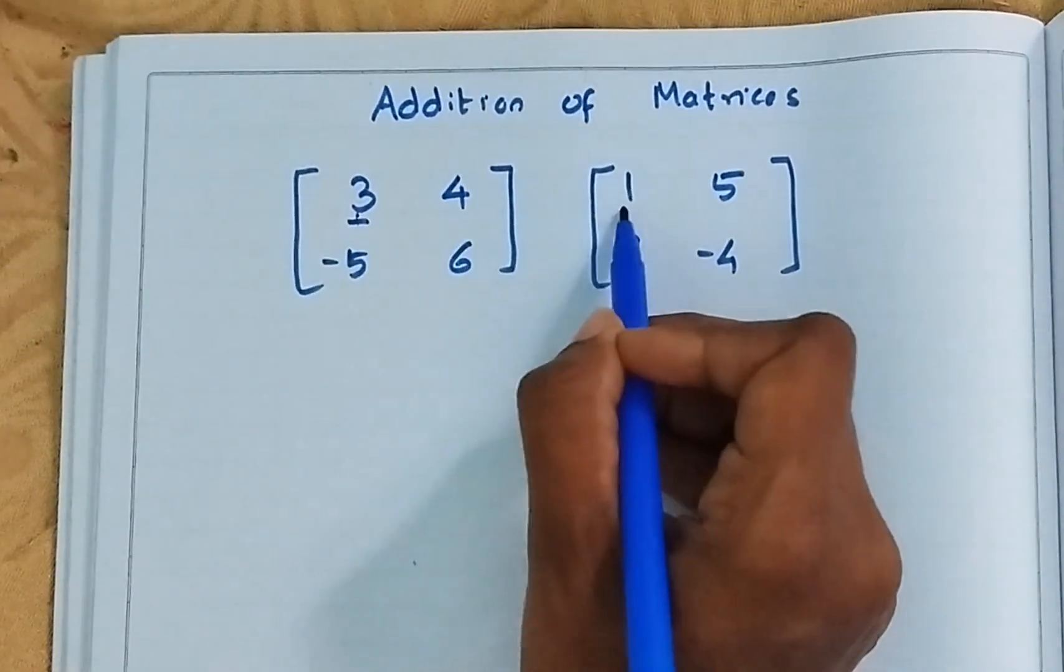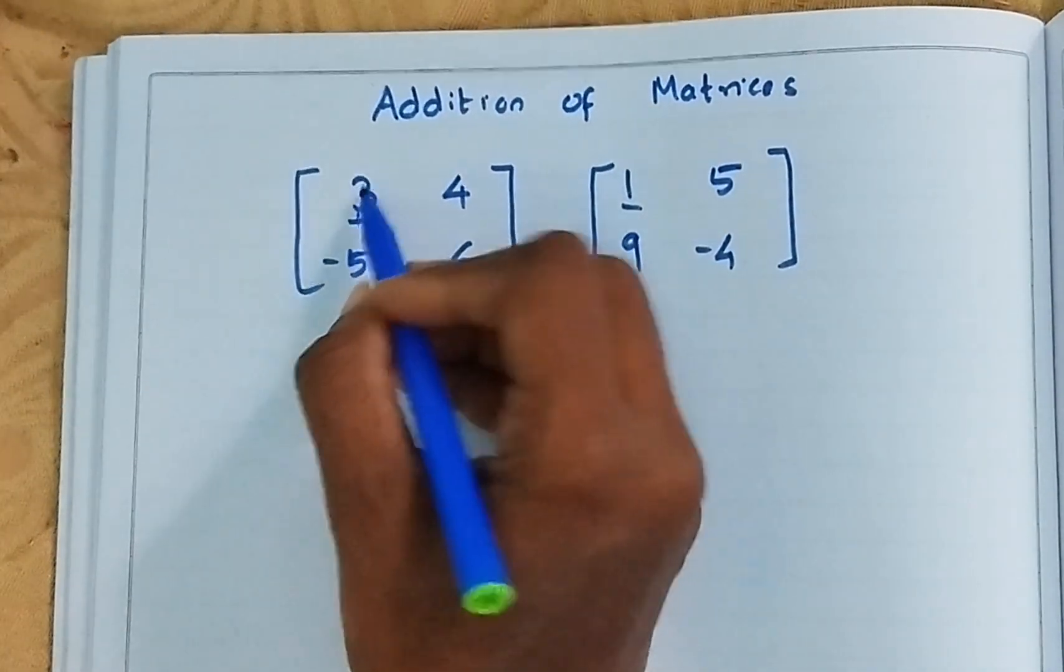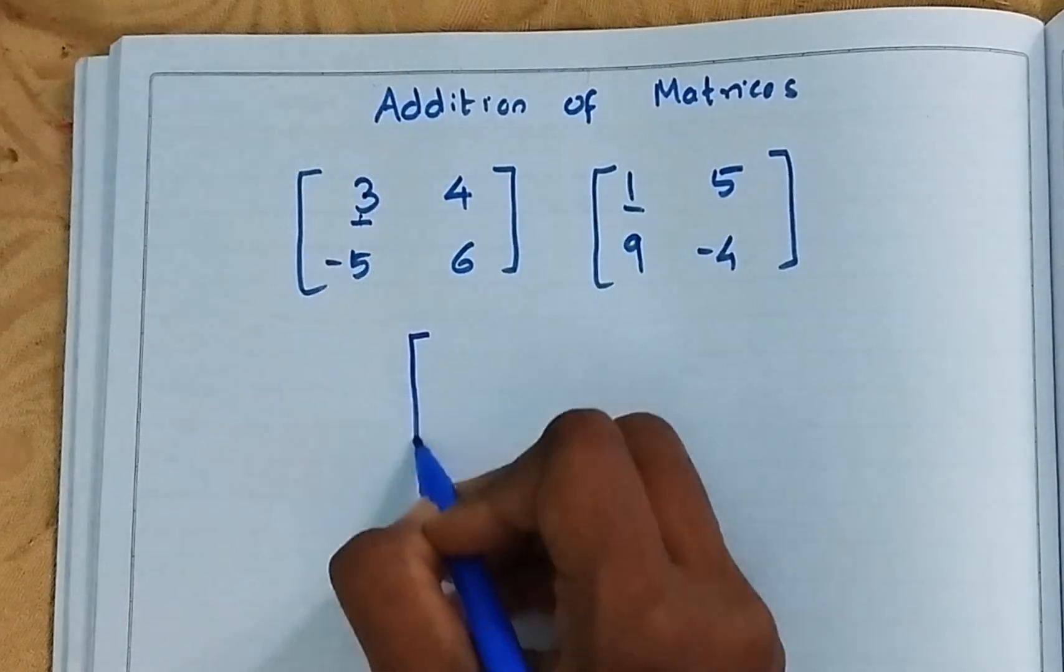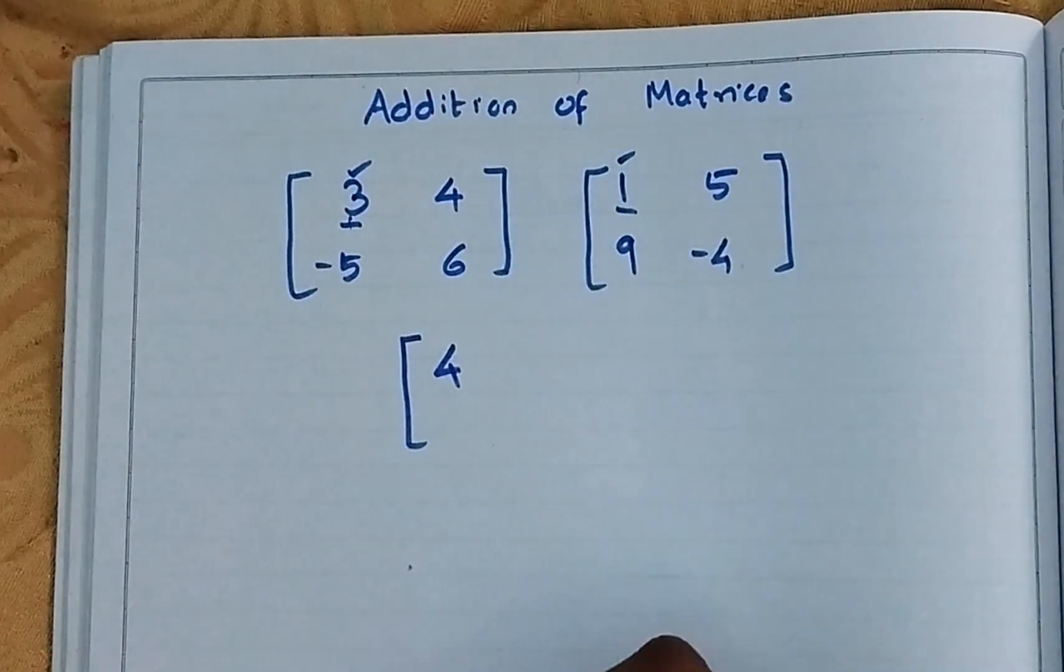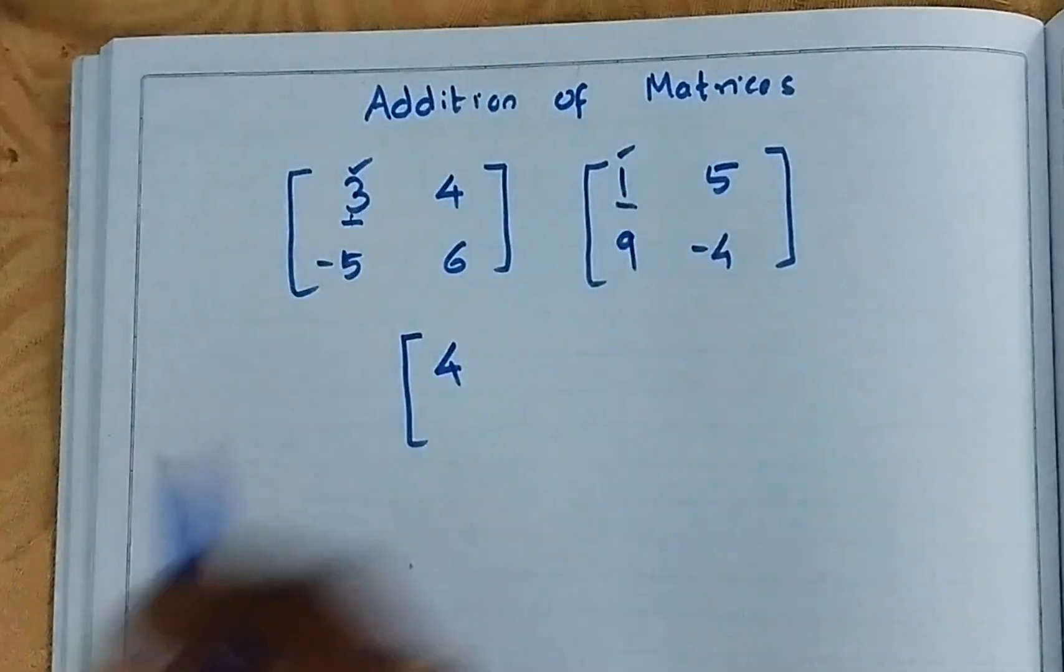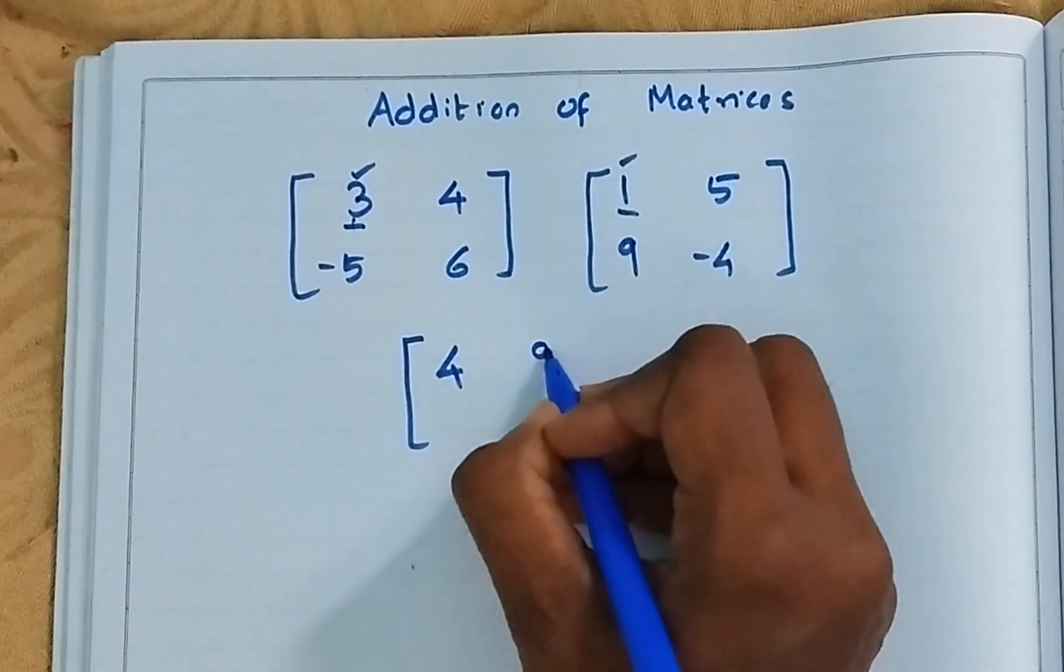So first element plus first element. You have to see the same. First plus first. That is 3 plus 1 equals 4. This is done. First one, first one. Now next is second, second. 4 plus 5, 9.